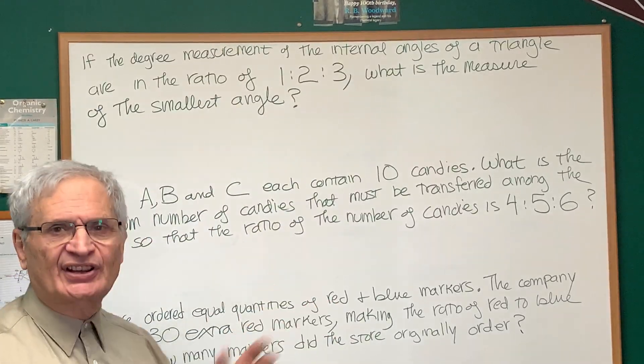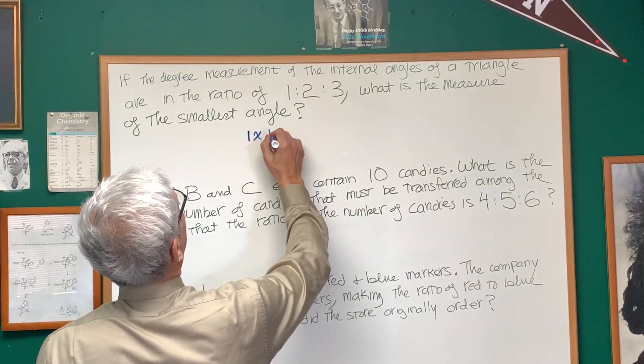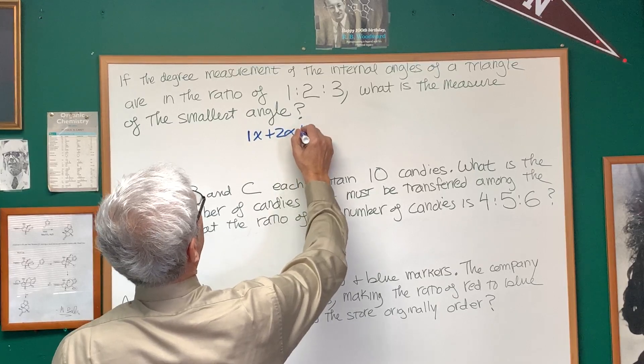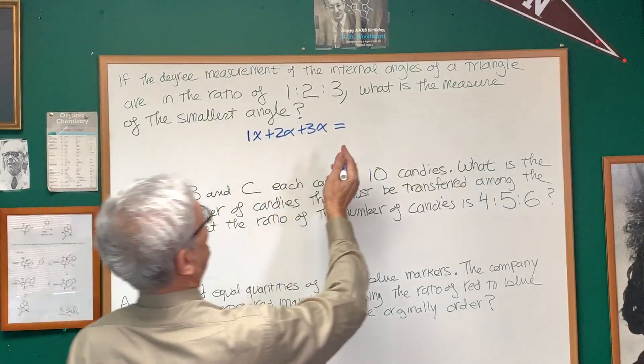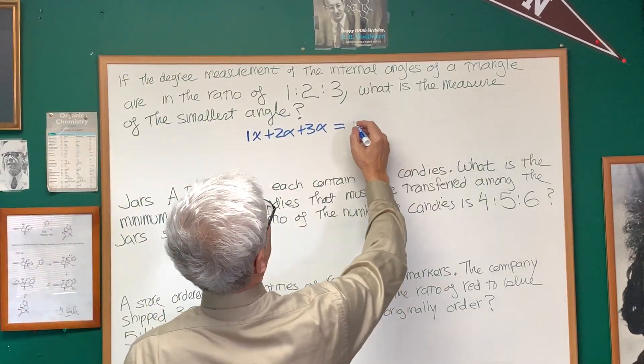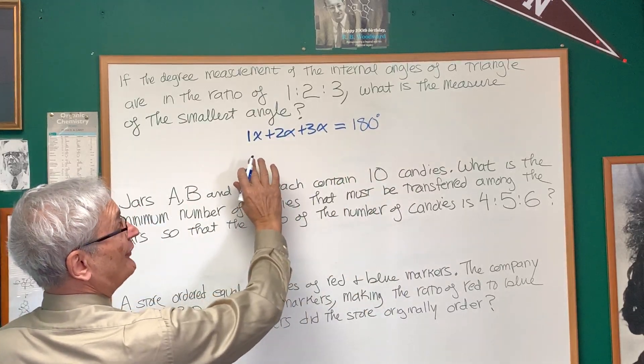Well, let's say x is the constant of proportionality, which means that I have 1x plus 2x plus 3x, each representing one of the angles of the triangle, the internal angles of the triangle. What do the angles of a triangle add up to? 180 degrees. So let's solve for x.